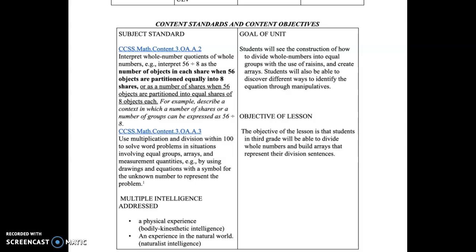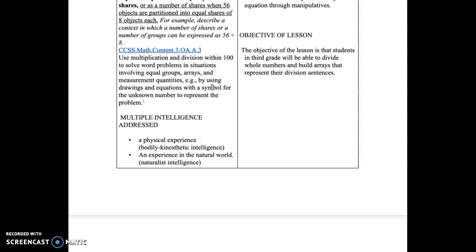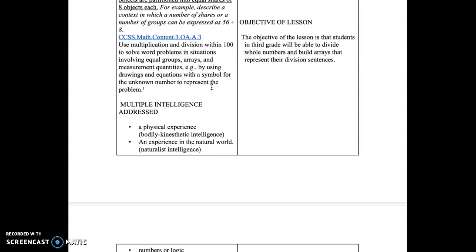The goal of this unit is for students to see the construction of how to divide whole numbers into equal groups with the use of raisins and to create arrays. Students will also be able to discover different ways to identify equations through manipulatives, which are the raisins in this case. My objective for this lesson is that students in third grade will be able to divide whole numbers and build arrays that represent their division sentences.